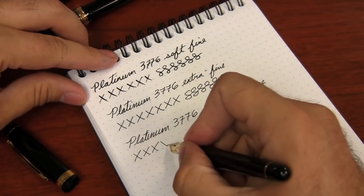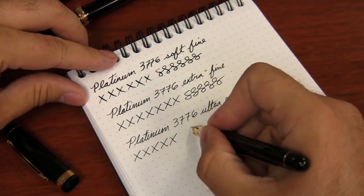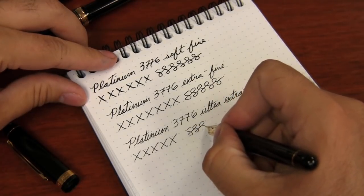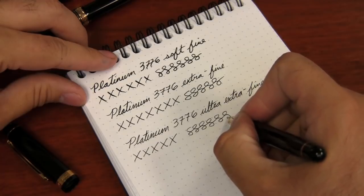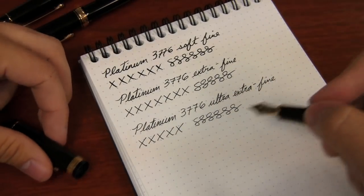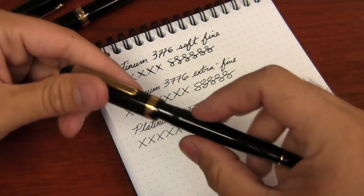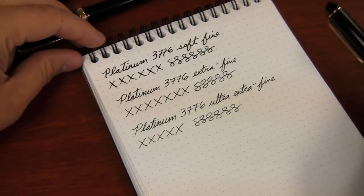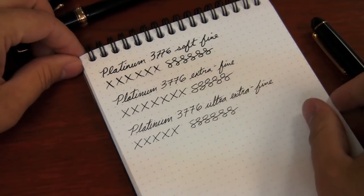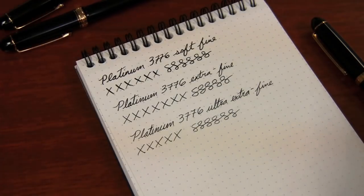It's absolutely tiny. Now this one in the spirit of the extra fine is going to write with a little more resistance, a little more tooth than even the extra fine does. So you kind of slow down a little bit. You got to write with a light hand when you're using a nib this fine.